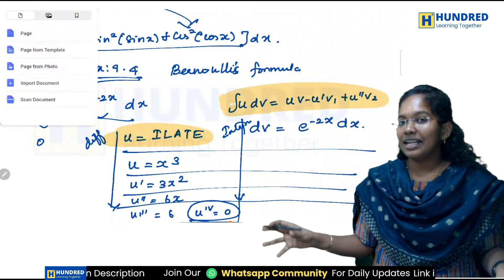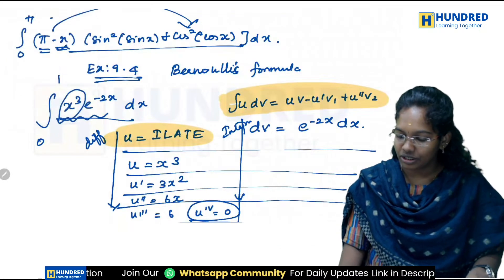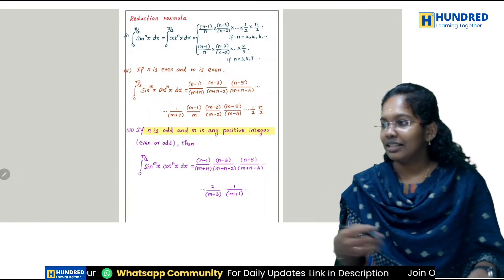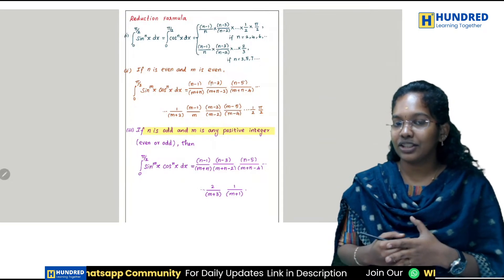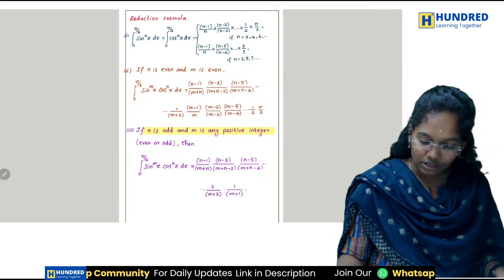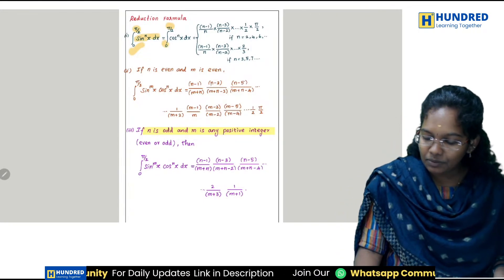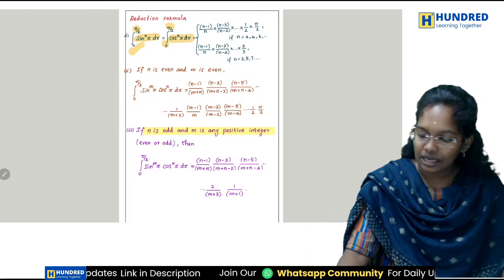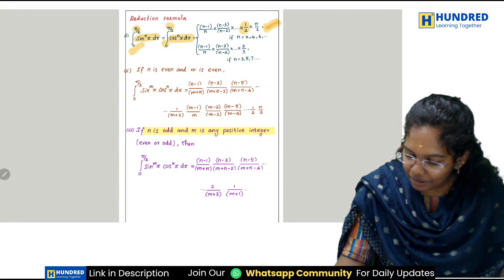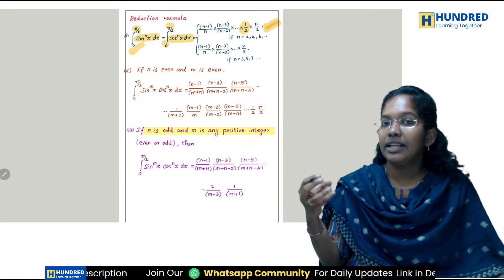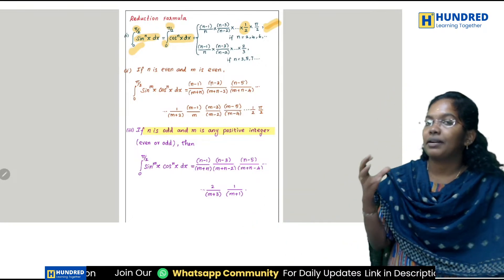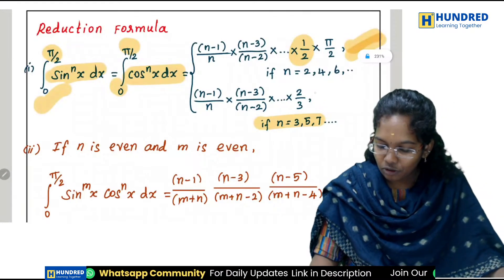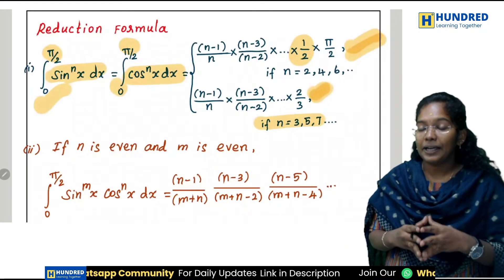Again we will start the formula discussion. The next one is the reduction formula. Reduction formula — when do you use it? You use it when limits are from 0 to π/2 with sin power n dx or cos power n dx. The formula will be: 1/2 multiplied by π/2, giving the answer.